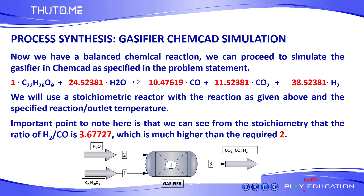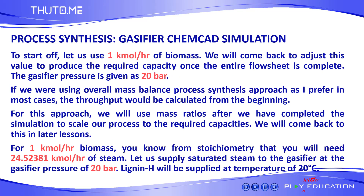Now we have a balanced chemical reaction. We can proceed to simulate the gasifier in CAPCAD, as specified in the problem statement. We will use a stoichiometric reactor with the reaction as given here, and the specified reaction temperature and pressure. It is an important point to note that we can see from the stoichiometry that the ratio of H2 to CO is 3.677, which is much higher than the required value of 2 for the methanol synthesis reaction. To start off, let us use a feed flow rate of 1 kilomole per hour for biomass. We will come back to adjust this value to produce the required capacity once the entire flow sheet is complete.